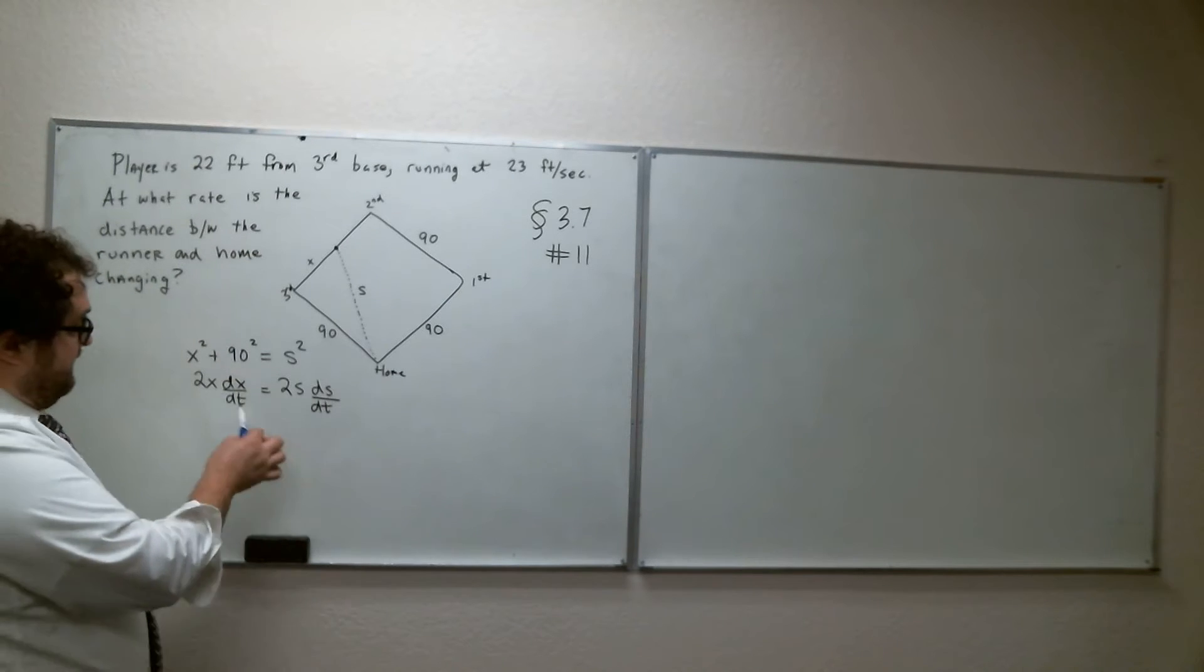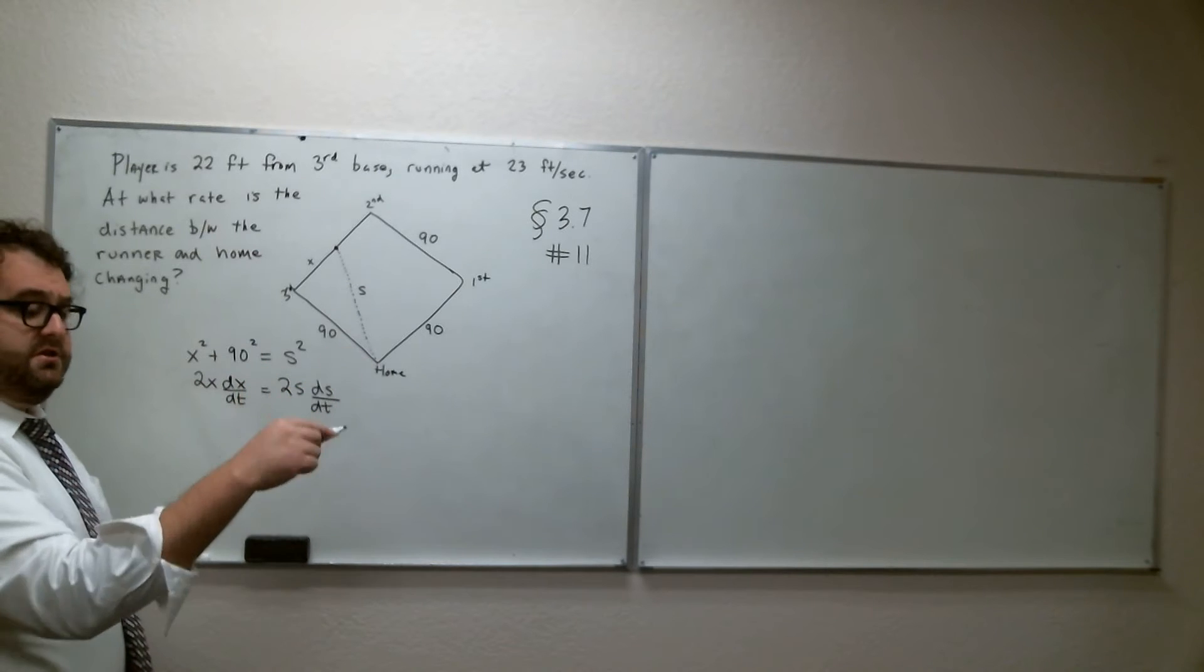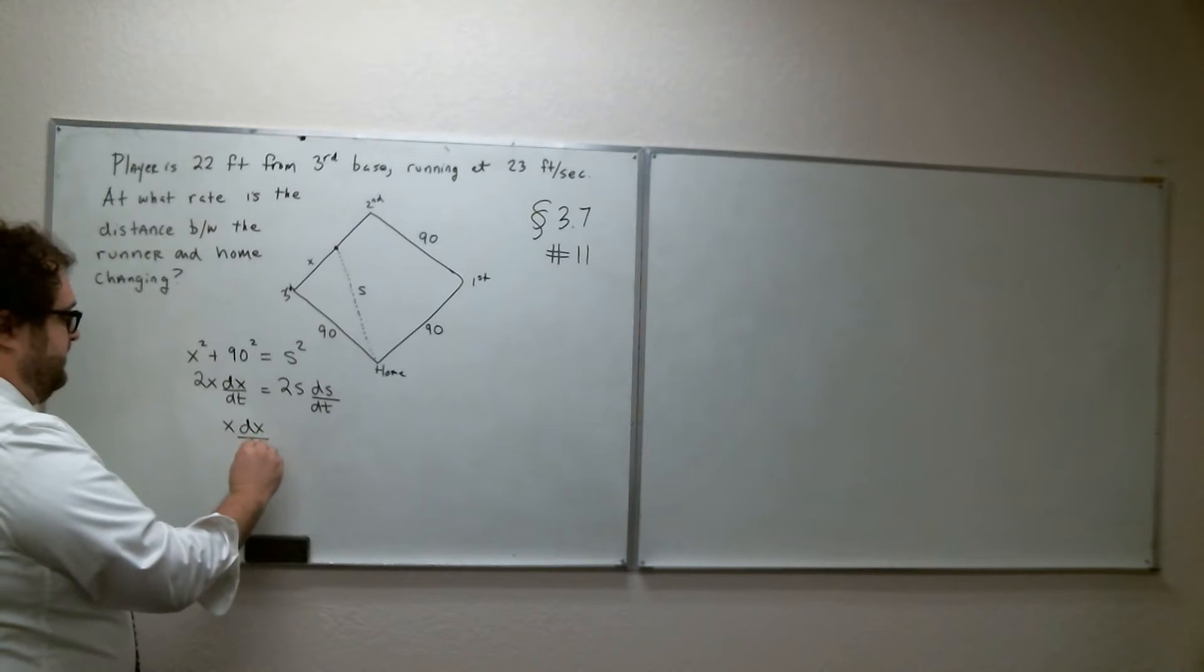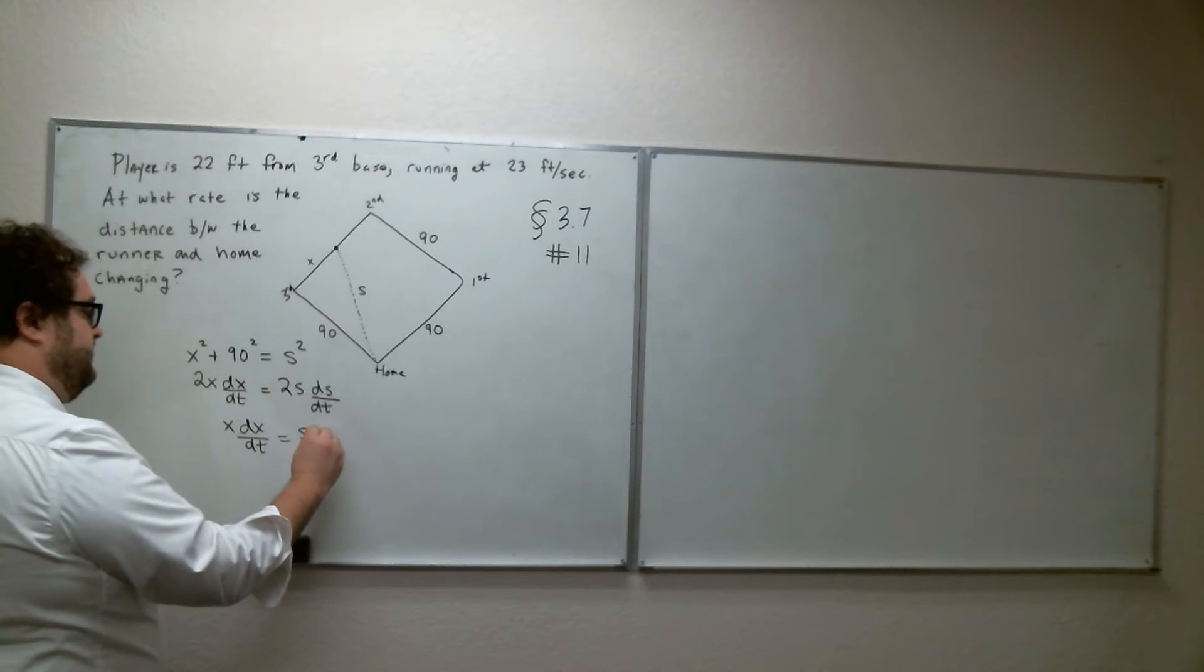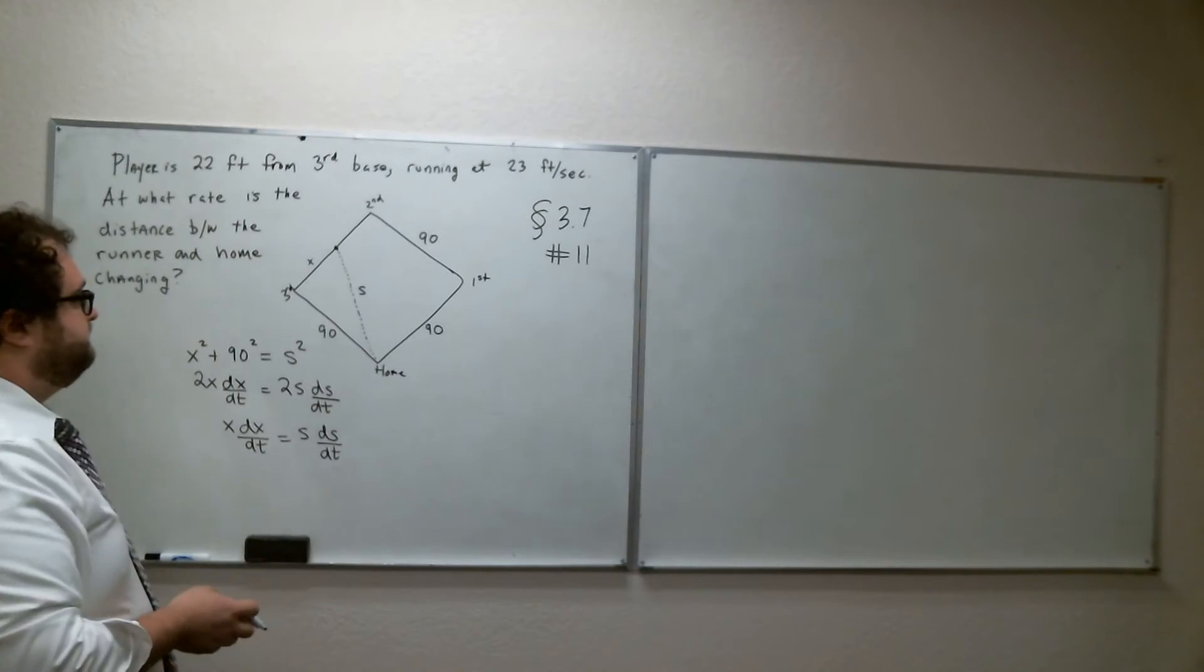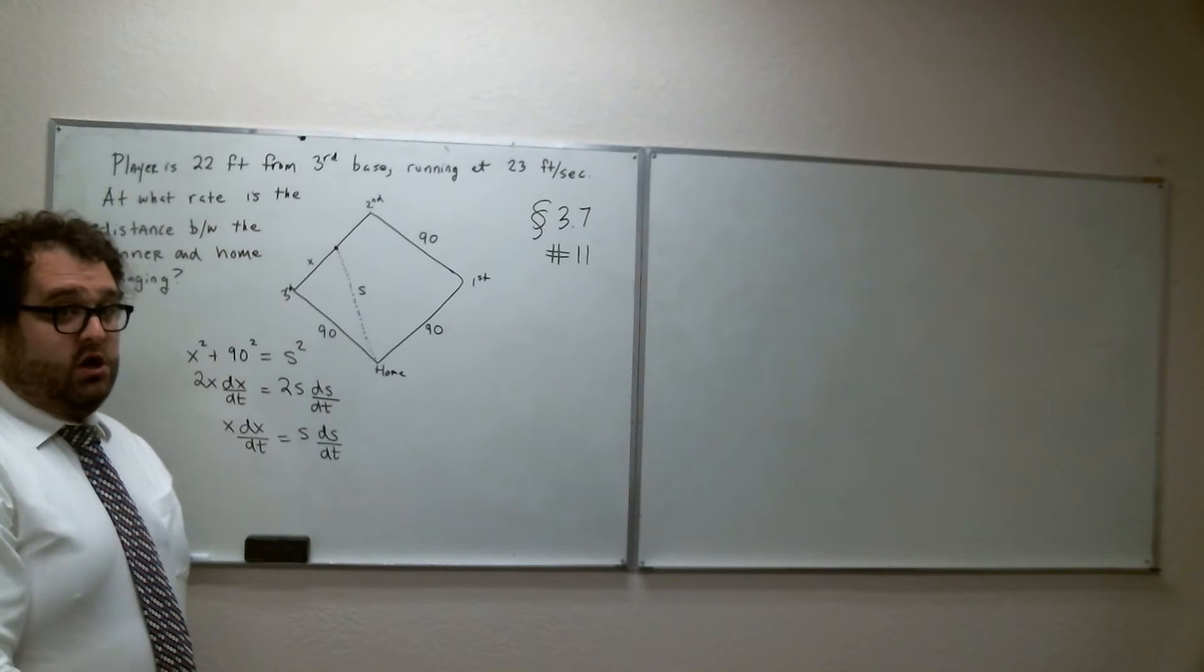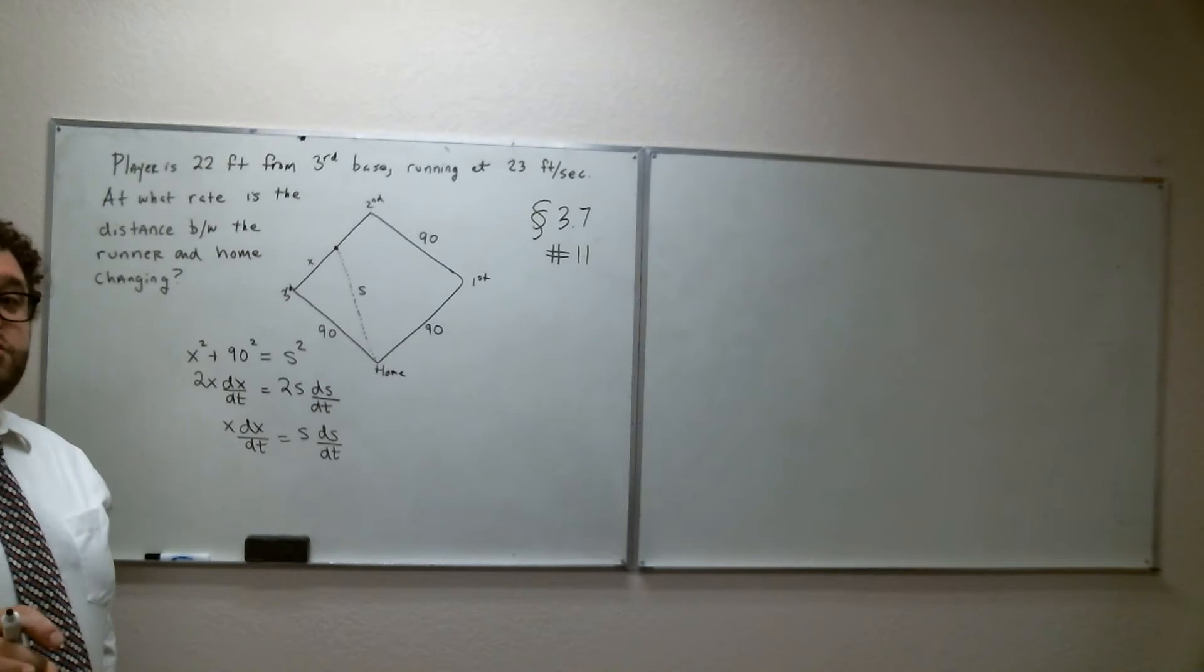Now, notice here, we have a 2 on both sides of the equation, so we can reduce this equation slightly. We can just say that this is equal to X times DX/DT equals S times DS/DT. Okay, now, what information do we know? Once we take our derivative of our related rates equation, we need to figure out what are we given, and is that sufficient to solve?